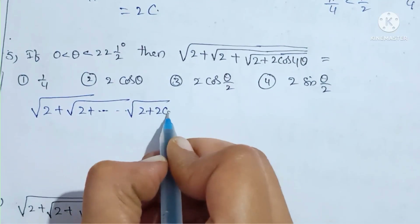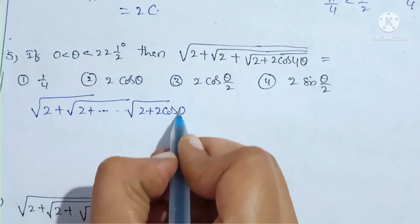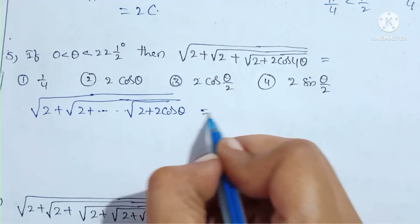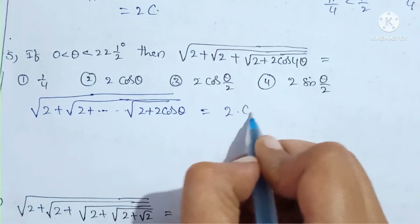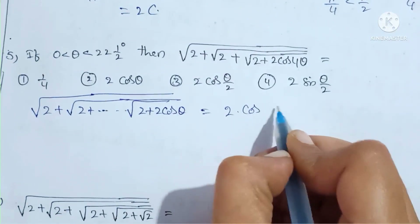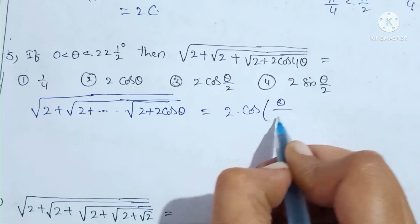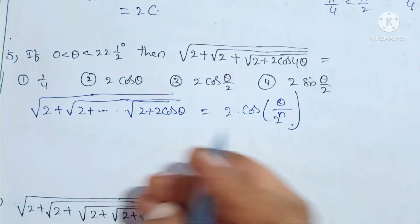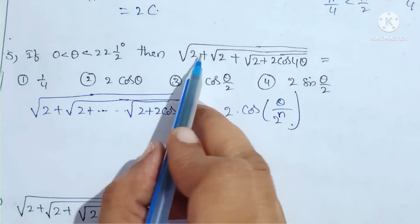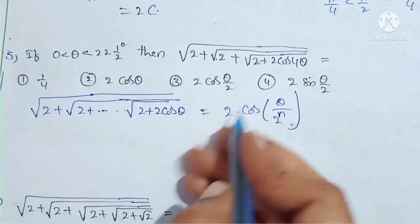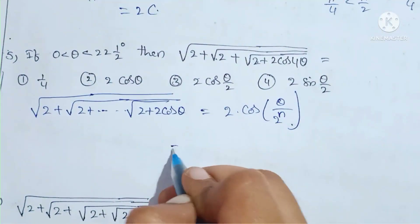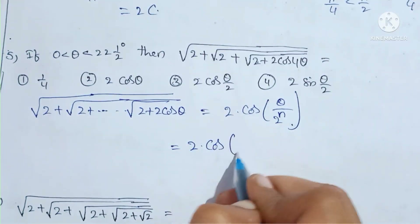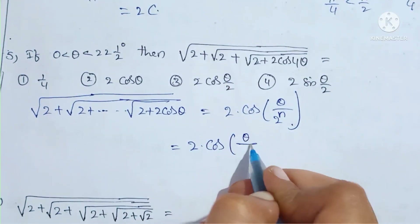Next problem: √(2 + √(2 + √(2 + ...))) (nested radicals). Using the formula √(2 + 2cos θ) = 2cos(θ/2), we apply this n times. The result is 2cos(θ/2^n).